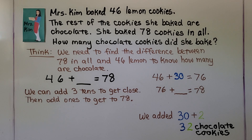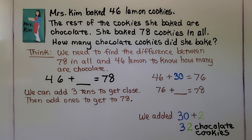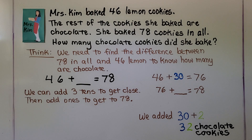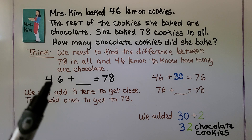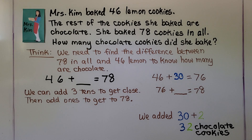Word problem: Mrs. Kim baked 46 lemon cookies. The rest of the cookies she baked are chocolate. She baked 78 cookies in all. How many chocolate cookies did she bake? We need to find the difference between 78 cookies in all and the 46 lemon cookies. We need to find: 46 plus some number equals 78.